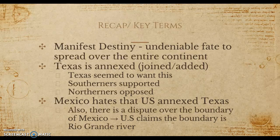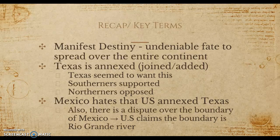Texas seemed to want annexation because it was predominantly filled with white settlers from America. The Southerners supported it because they wanted Texas to be a slave state, but Northerners generally opposed it, and Mexico outright hated that the United States annexed Texas. Mexico never recognized that Texas was independent and could choose to be annexed to the Union, so they saw this as America stealing land that was rightfully theirs.